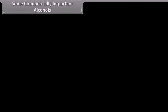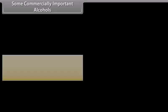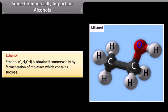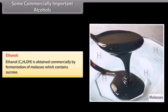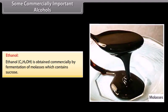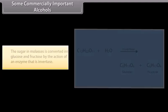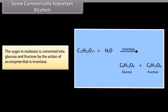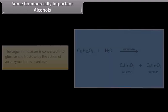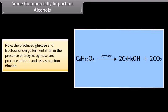Ethanol: ethanol is obtained commercially by fermentation of molasses, which contains sucrose. The sugar in molasses is converted into glucose and fructose by the action of the enzyme invertase. The produced glucose and fructose then undergo fermentation in the presence of the enzyme zymase and produce ethanol, releasing carbon dioxide.